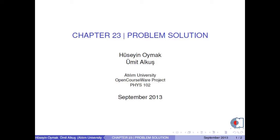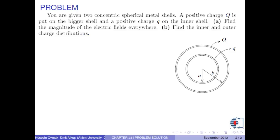Hello everyone, I am Mehmet Alkuş. In this video, we will solve one problem in Chapter 23. You are given two concentric spherical metal shells. A positive charge capital Q is put on the bigger shell and a positive charge Q on the inner shell. Part A: Find the magnitude of the electric fields everywhere.